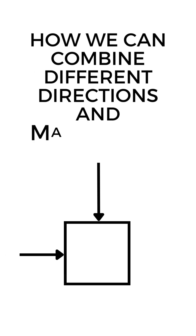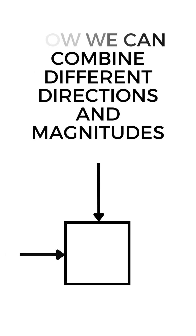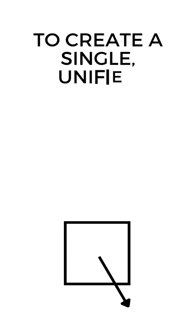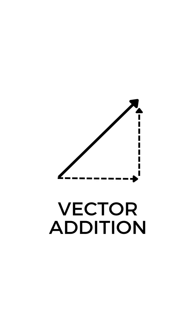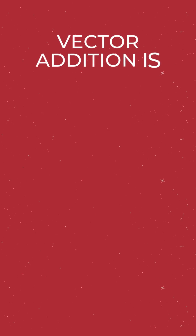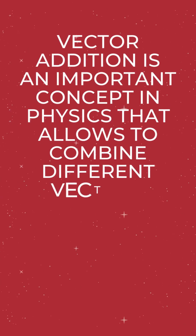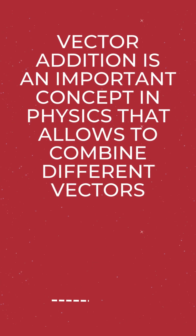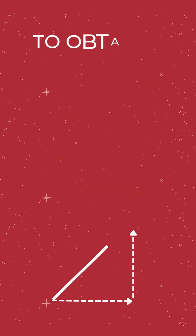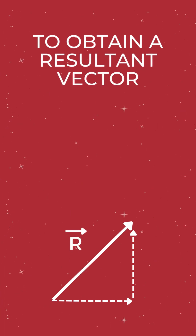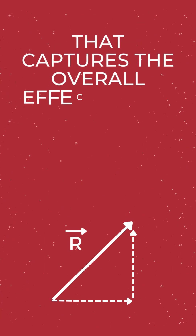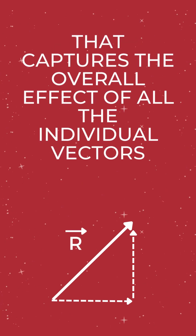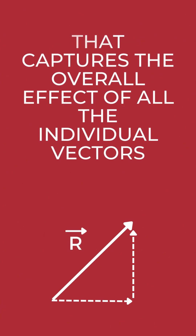Have you ever wondered how we can combine different directions and magnitudes to create a single, unified force? Well, the answer lies in vector addition. Vector addition is an important concept in physics that allows us to combine different vectors to obtain a resultant vector that captures the overall effect of all the individual vectors.